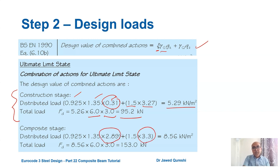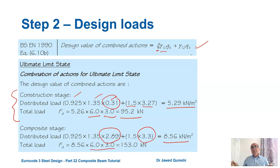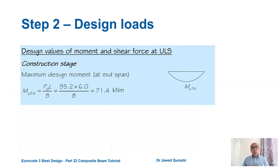For the composite stage distributed load, using the same Equation 6.10b with gk = 2.89 kN/m² and qk = 3.3 kN/m² gives 8.56 kN/m². Multiplied by the span (6 m) and bay width (3 m) we get the total design load for the composite stage.